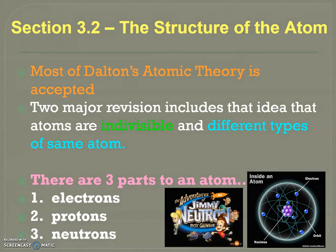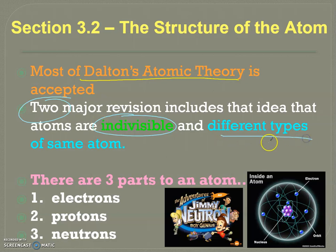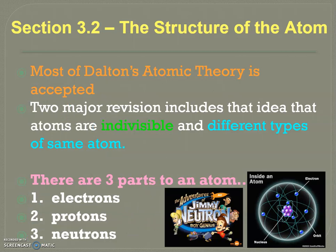This video is about how we update Dalton's atomic theory and make it more relevant, going over all of the different scientists that led to our current model of the atom. There were two major revisions to Dalton's atomic theory. He said that all atoms are indivisible and that there were not different types of the same atom. We know now that is untrue. You obviously know about electrons, protons, and neutrons.